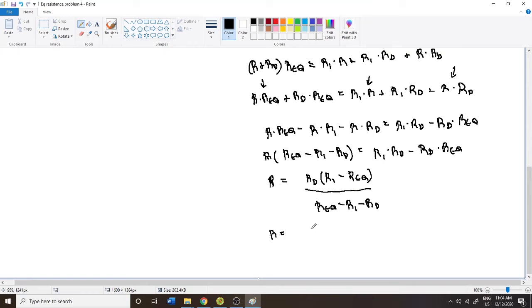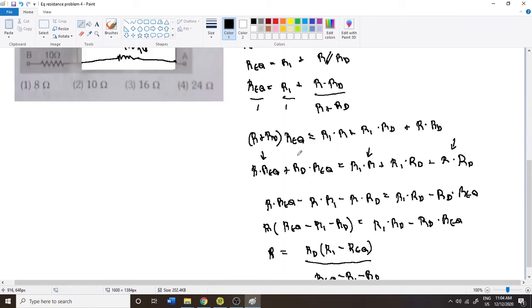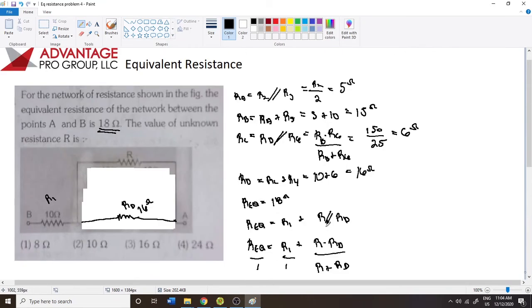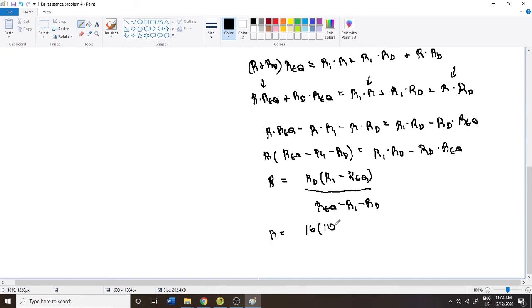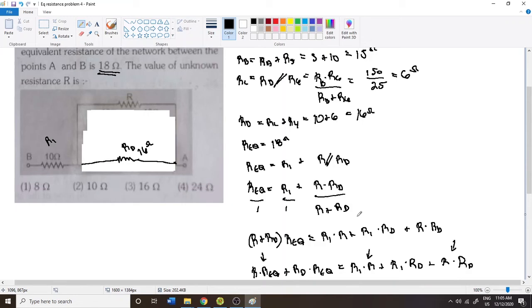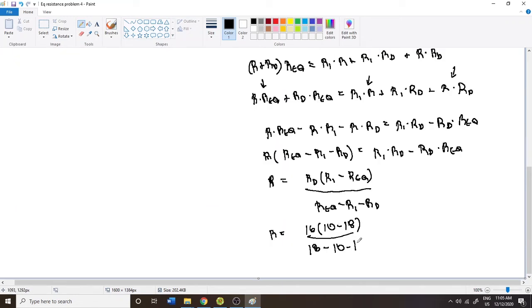RD, what was that? RD was 16 ohms. What was R1? 10. What was REQ? 18. I don't know if this is going to turn out, it's starting to look negative. This better be negative, right? This denominator better be negative or we made a mistake. REQ is 18 minus 10 minus RD, 16. So we have 16 multiplied by negative 8 over 8 minus 8 is negative 8. Oh thank God, right? Thank God these canceled out because if it didn't, we'd have an issue. So both of these go to unity and you get 16 ohms. That's your answer.